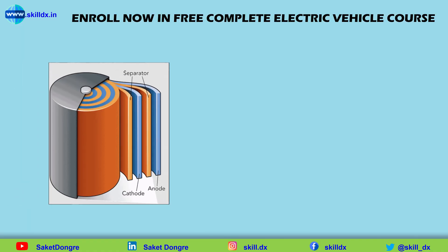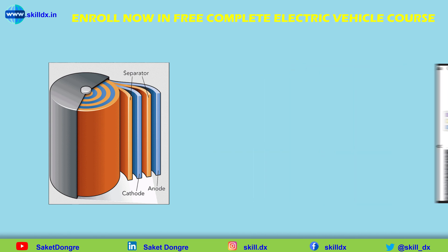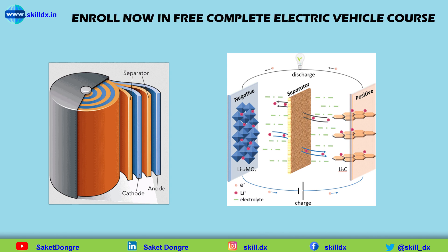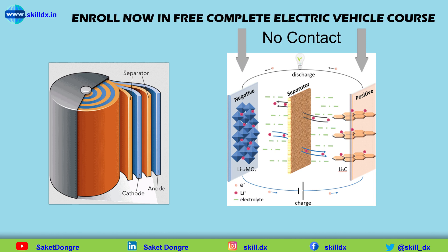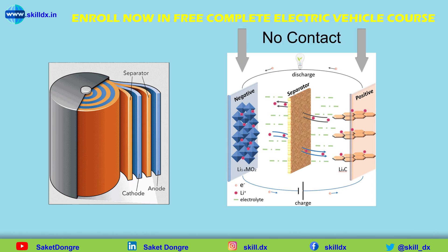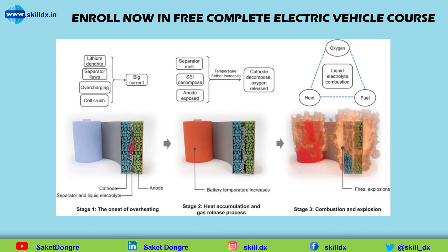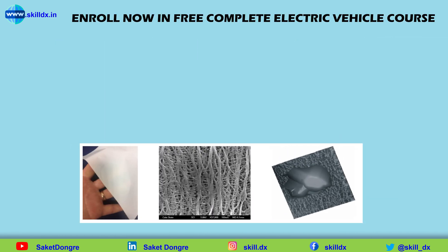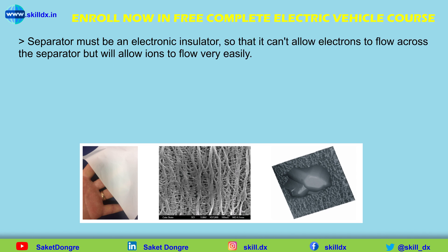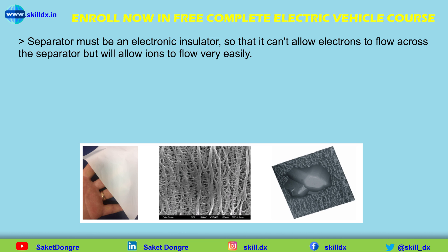Lithium-ion battery cells must also have a separator — a permeable membrane with tiny holes in it. These holes are large enough for ions to pass through, but small enough that the positive and negative electrodes cannot touch each other. If they were to touch, you would have a short circuit leading to heat buildup and thermal runaway, possibly causing fire or explosion. For this reason, the separator must also be an electronic insulator — electrons cannot flow across it, but ions must flow very easily through its pores.